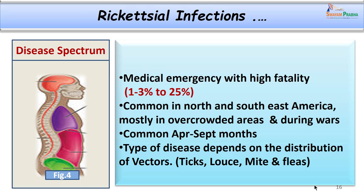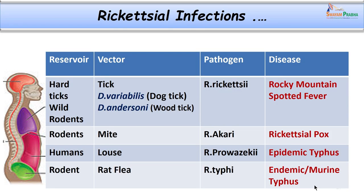The disease most commonly occurs in the months between April and September, because it is related to the feeding habits of adult ticks, which are most active during that time. Rickettsial group of diseases are transmitted by arthropod vectors — ticks, lice, mites and fleas. Disease distribution usually depends upon the distribution of these vectors. The vector like the dog tick or wood tick is known to transmit Rocky Mountain spotted fever, caused by Rickettsia rickettsii.